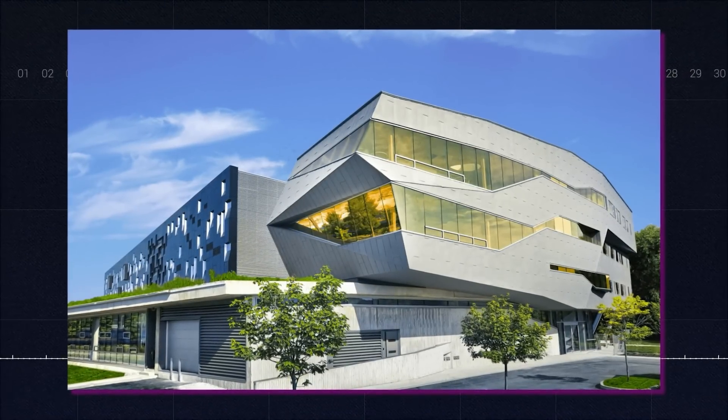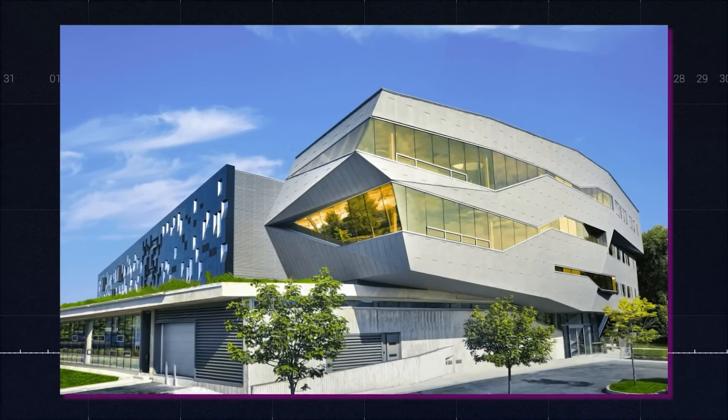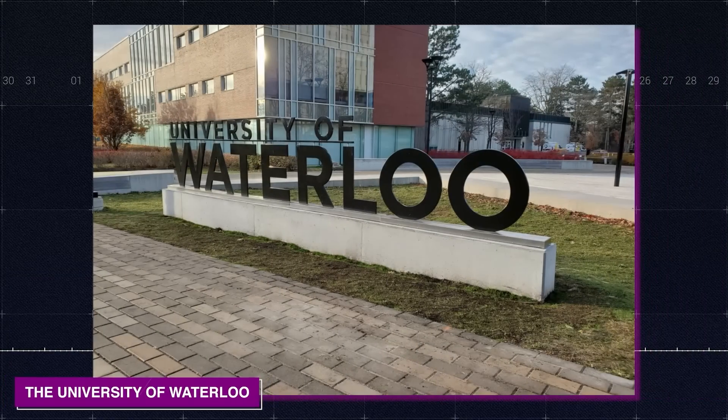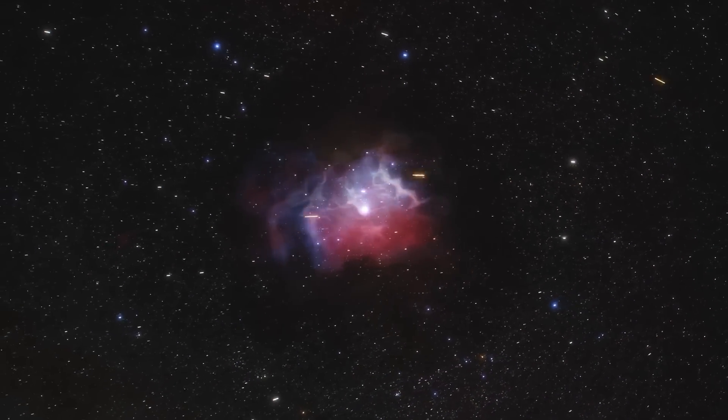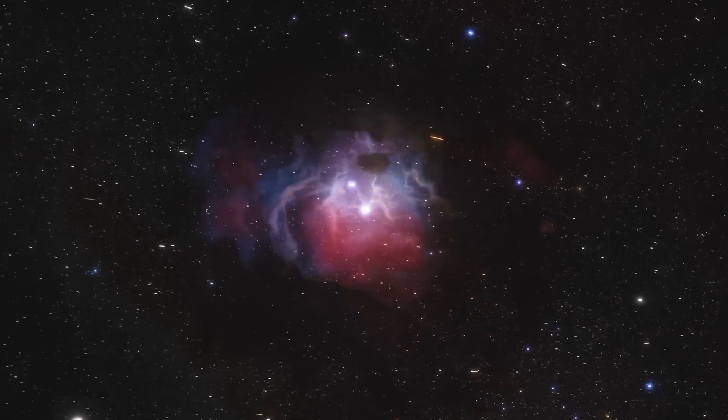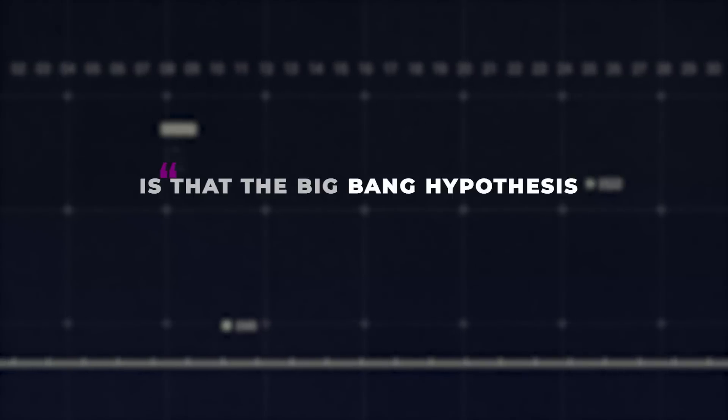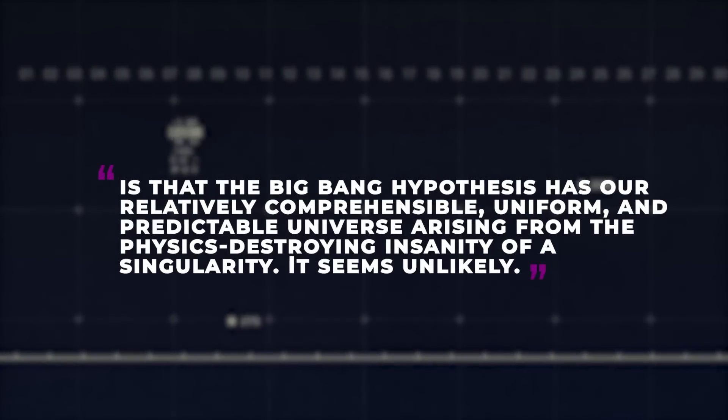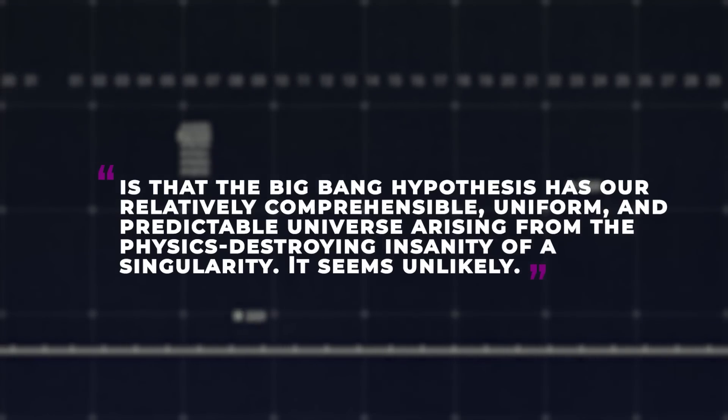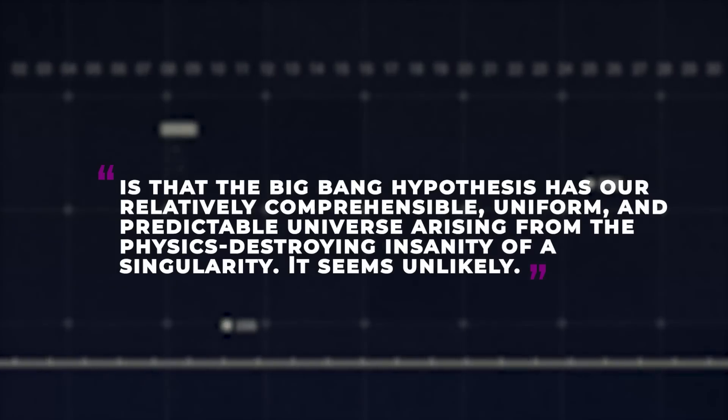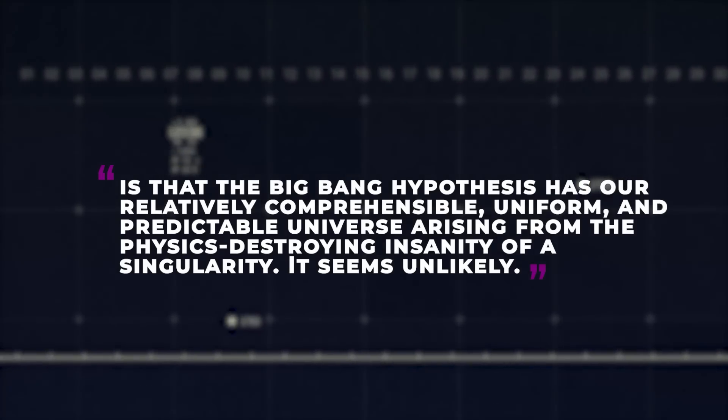All of that data may be used to explain everything in our universe. This possibility was first proposed by researchers at the Perimeter Institute at the University of Waterloo in 2014. According to the researchers, there is one problem with the Big Bang. They say the problem is that the Big Bang hypothesis has our relatively comprehensible, uniform, and predictable universe arising from the physics destroying insanity of a singularity. It seems unlikely.